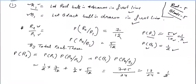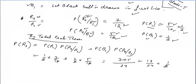If the first ball is red and you put two more red balls in, you have 7 red balls out of 12 total, so probability of R2 given R1 = 7/12. If the first ball is black, red balls remain 5 out of 12 total, so probability of R2 given B1 = 5/12. By the total probability theorem: P(R2) = P(R1)·P(R2|R1) + P(B1)·P(R2|B1). Substitute all values to get the final answer.